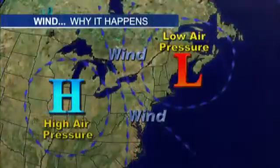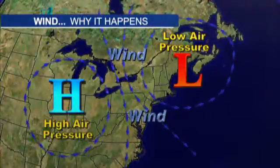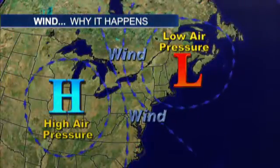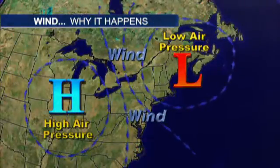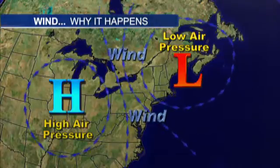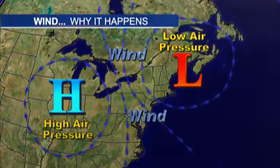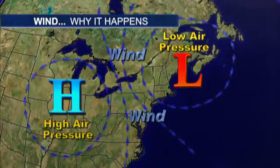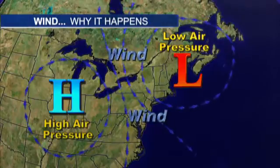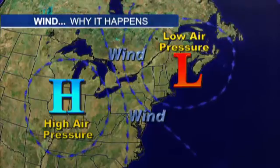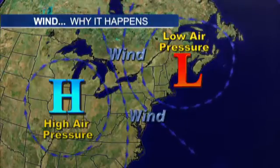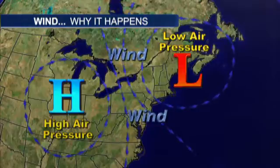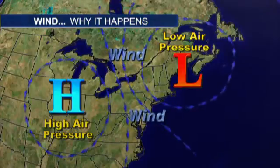Essentially, the wind is caused by differences in air pressure. I've got a graphic here to kind of illustrate that — just the basic concept. High pressure, where the air is dense, tends to send the wind in the direction of low pressure, where the air is much less dense. The stronger the difference in pressure between weather systems creates a stronger wind flow.